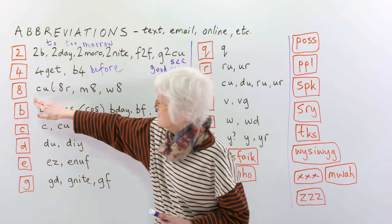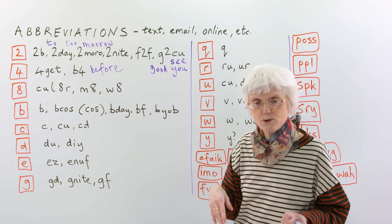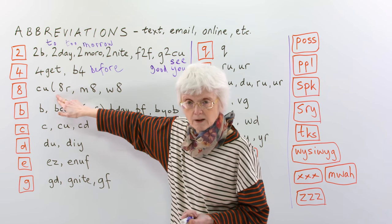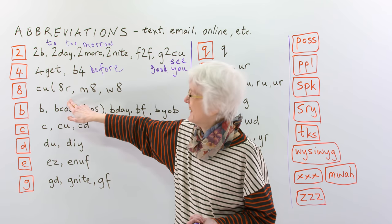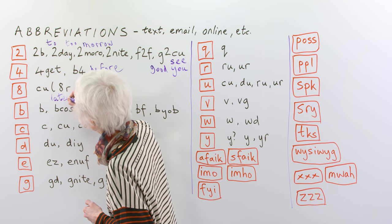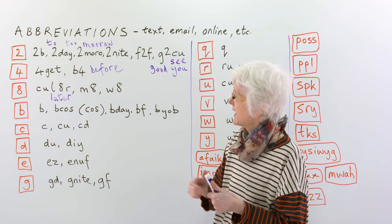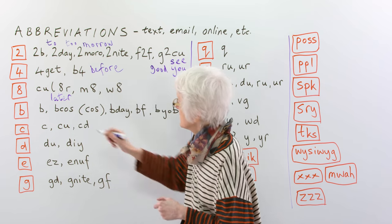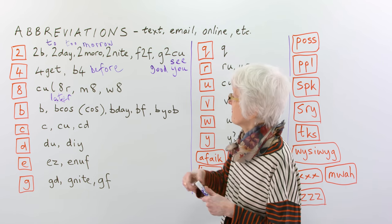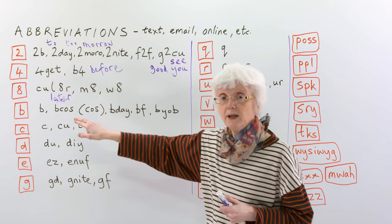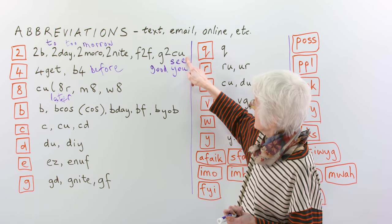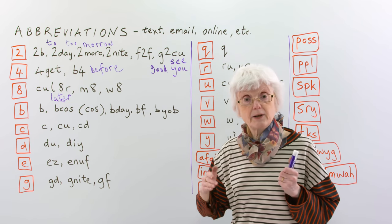Okay? Next one is eight. Now, this is a rather funny one, but it's very useful. So, we've got here, see you, like this one again. See you. All. Eight. Er. So, see you later. The eight is part of the word. Later. See you later. It's very, very quick. One, two, three, four, five characters. There are five letters in the word later on its own. Here, you've got see you later. Just in five characters.